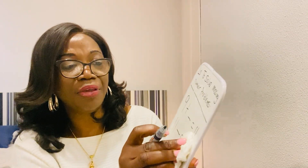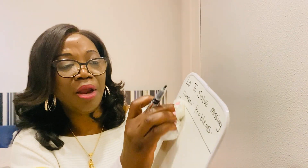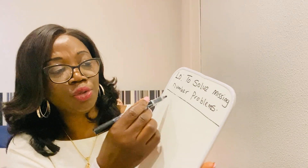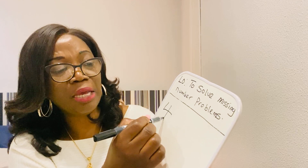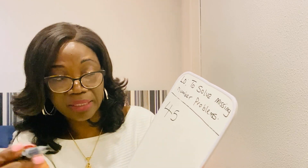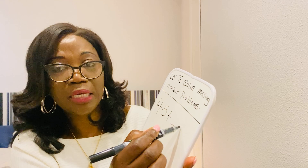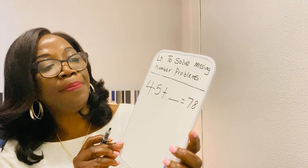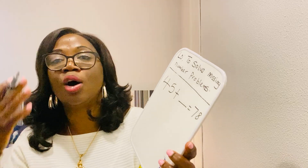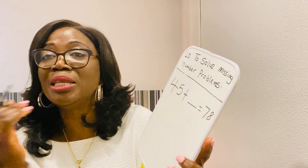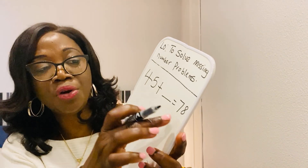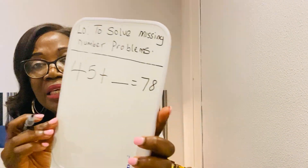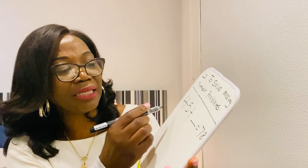Now we are going to make a very, very tricky number. Remember, Year 2 is not that tricky — you just need to keep practicing. So let's say we have 45 plus something equals 78. Wow, this is a big number! How can I do this? All you need to do is to write a new number sentence to help yourself. Remember, you start with the big number. So in this case, we have 78 as our big number.